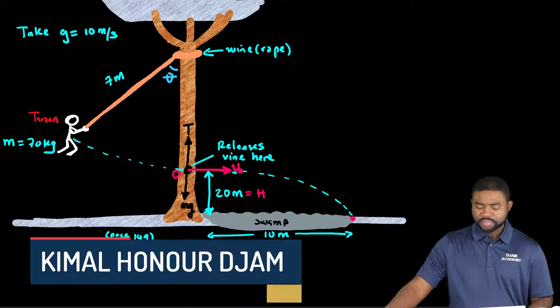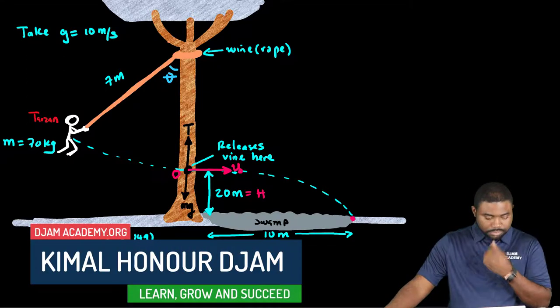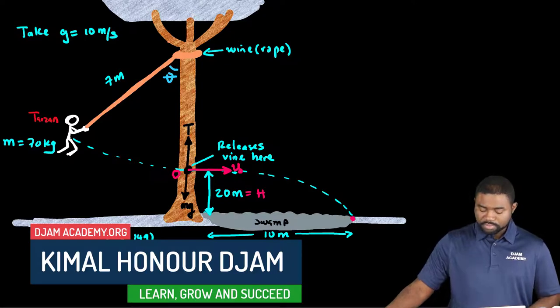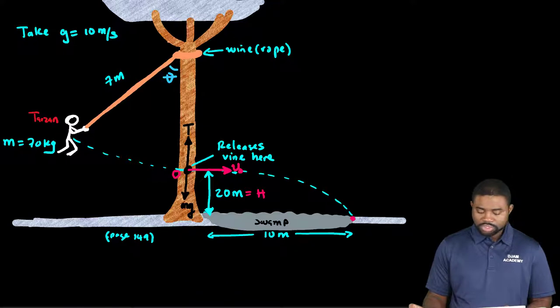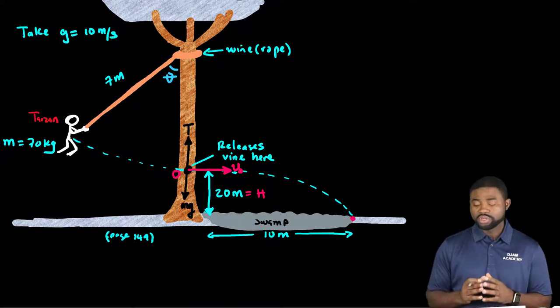Welcome to Jam Academy. In this example we have a man of mass M. He initially swings at the end of a very long rope.